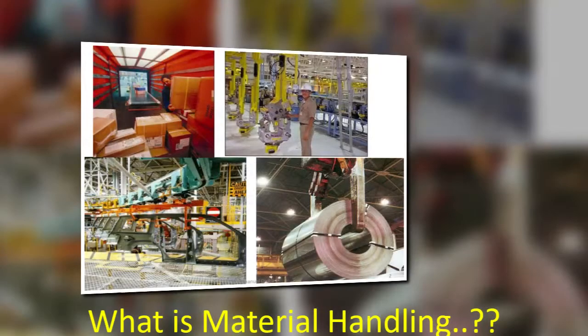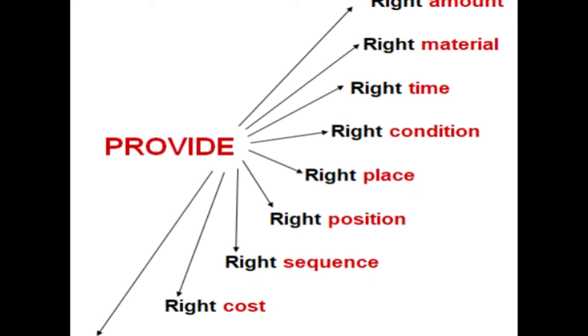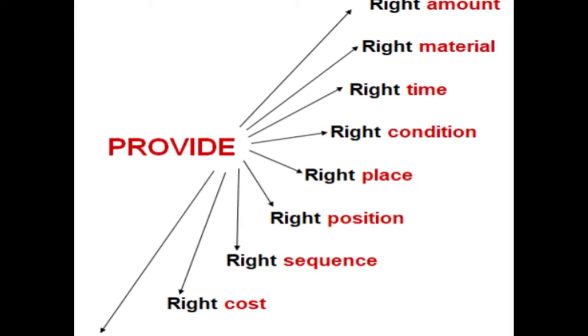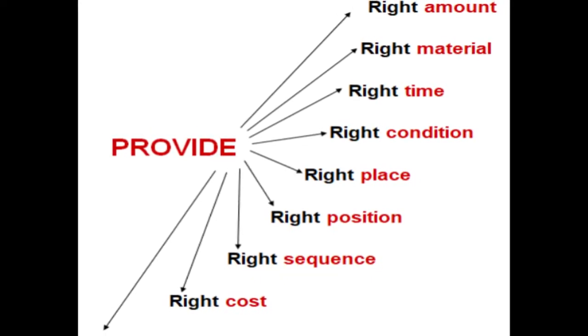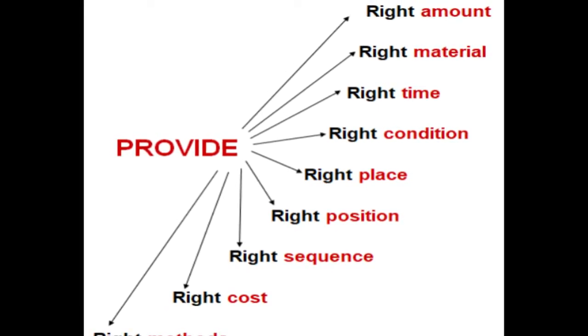In this module we'll be dealing with material handling systems, material handling principles, classification of material handling equipment, and the relationship of material handling to plant layout. Before we move on, let's first understand what material handling is. A material handling system is defined as providing the right amount of right material at the right time, in the right condition, at the right place, in the right portion, with the right sequence, at the right cost, using the right methods.